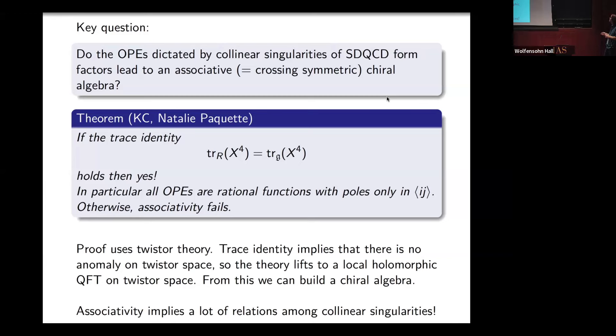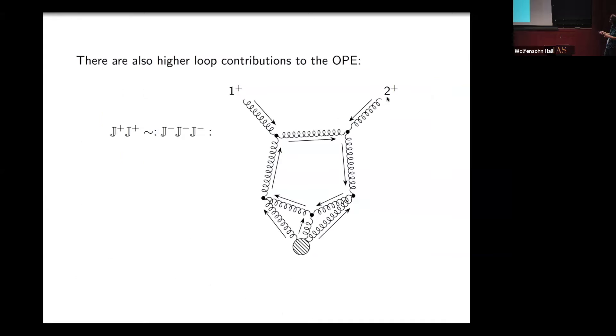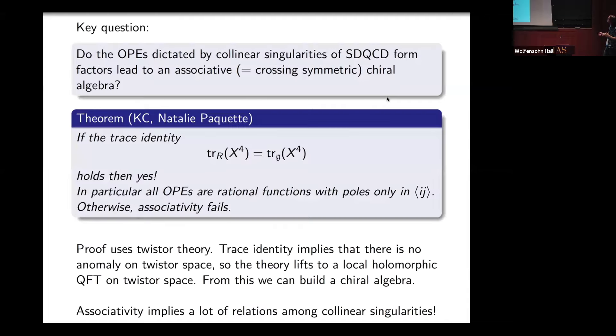If this identity does not hold, then associativity fails. This is a non-trivial statement because it implies this complicated thing is going to satisfy all kinds of intricate relations with the other OPEs. It turns out, through a result of Natalie and Victor Fernandes, that this complicated OPE is determined just by associativity. This tells you a lot about the structure of these very special collinear singularities.